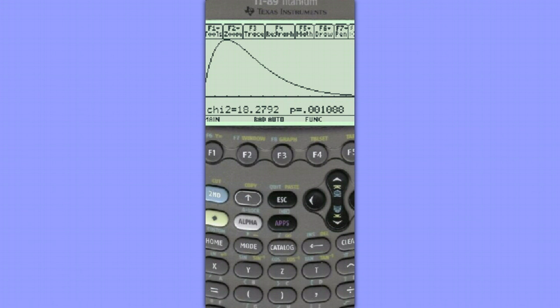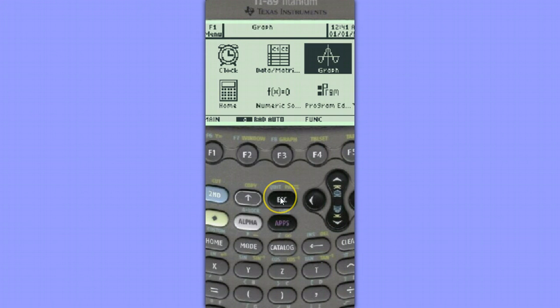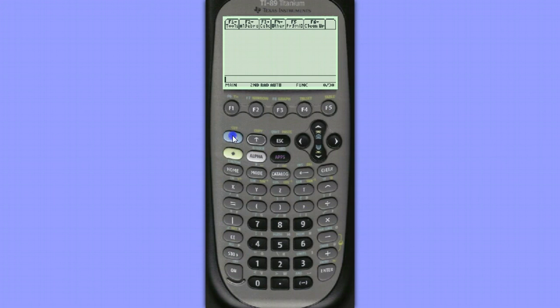To see a matrix of the expected counts, we need to go to the home screen. Hit second, escape, find the home screen, then hit second and the minus sign for variable link.